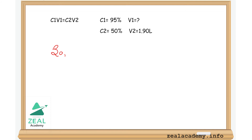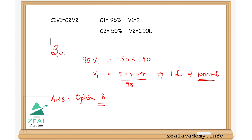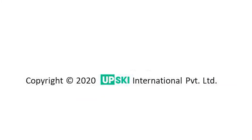we get 95 × V1 = 50 × 1.90. We also get V1 = (50 × 1.90) / 95, which leads to 1 liter or 1000 ml. Therefore, the correct answer to the question is option b.